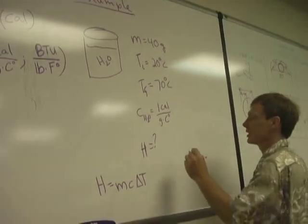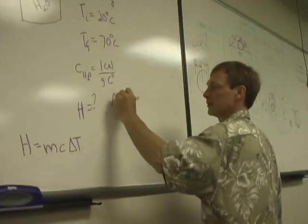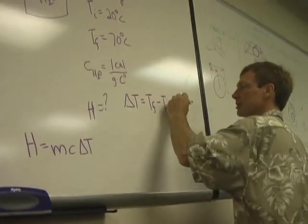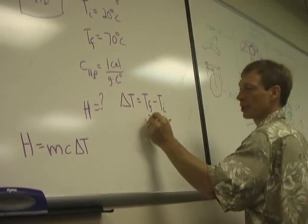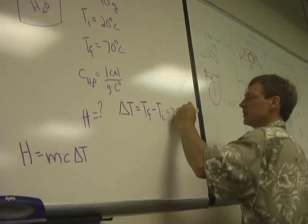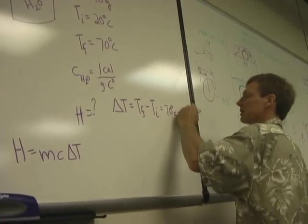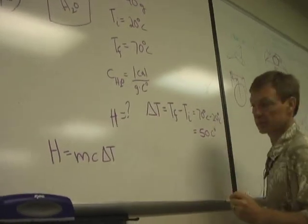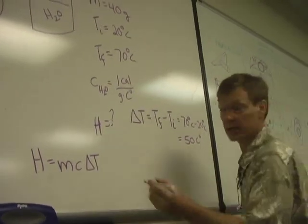So the temperature difference is the final temperature minus the initial temperature. Here's my working equation, which is 70 degrees Celsius minus 20 degrees Celsius, which would be 50 Celsius degrees.